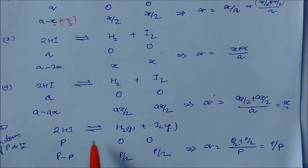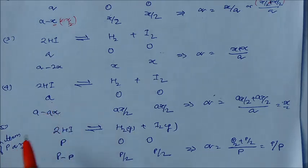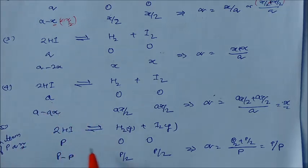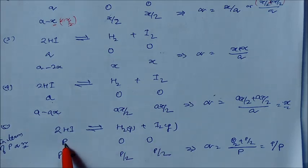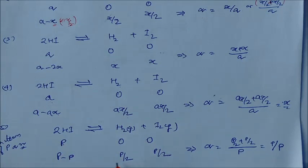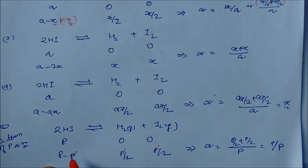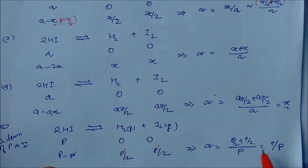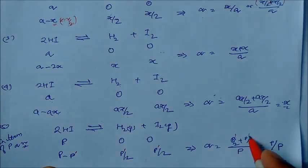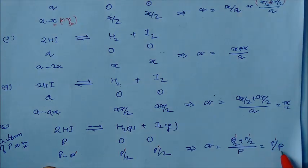We can also write the degree of dissociation in terms of pressure, since moles is proportional to pressure. Taking the initial pressure as P and zero for products, at equilibrium H₂ and I₂ each have pressure p/2, and 2HI has pressure P minus p (dissociated). So alpha = p/P, where p is the dissociated pressure.